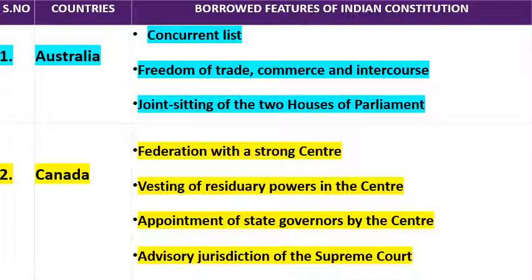Start करते हैं Australia से। तो Australia के constitution से हमारे India ने क्या-क्या borrow किया है? The first is Concurrent List — समवर्ती सूची, जिस पर संघ और राज्य दोनों मिलकर laws बना सकते हैं। जब आप 7th Schedule पढ़ेंगे, तो उसमें आपको 3 lists मिलेंगी: Union List, State List, और Concurrent List।